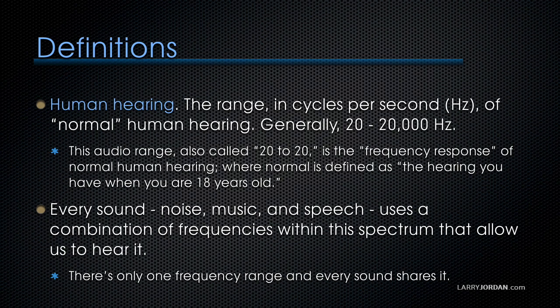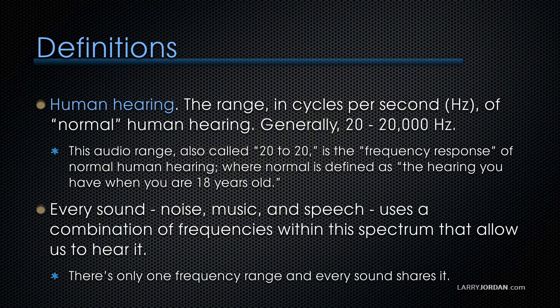Human hearing is the range, measured in cycles per second or hertz, of normal human hearing. Generally, this ranges from 20 to 20,000 hertz. This audio range, also called 20 to 20, is the frequency response of normal human hearing, where normal is defined as the hearing you have when you're 18 years old. Every sound, whether it's noise, music, or speech, uses a combination of frequencies within this spectrum that allow us to hear it. There's only one frequency range, and every sound shares it.